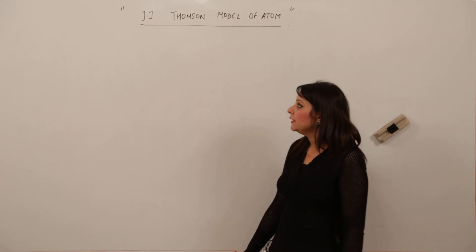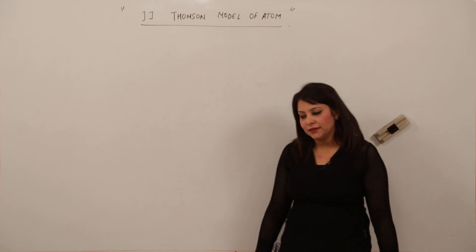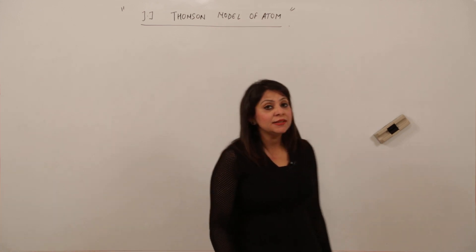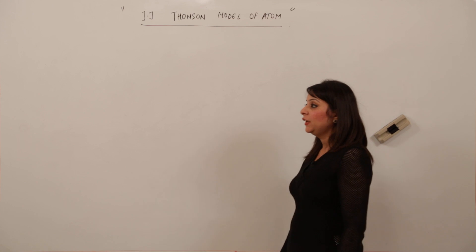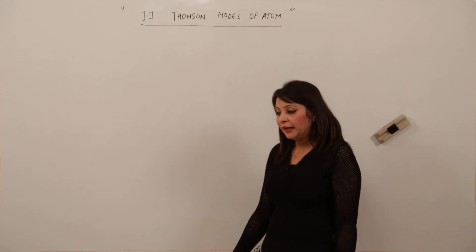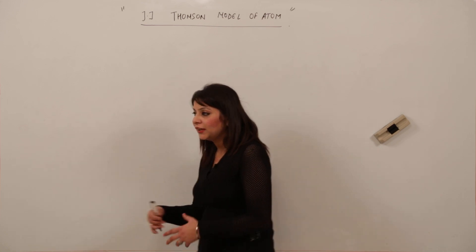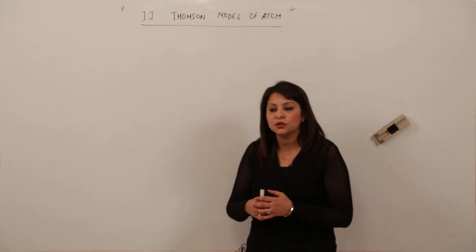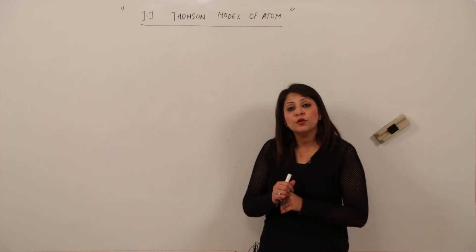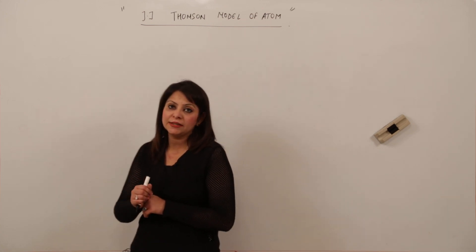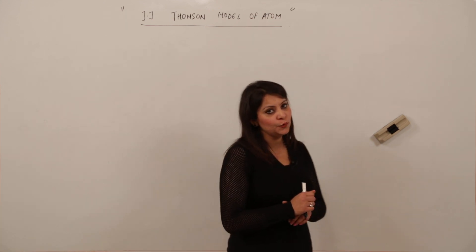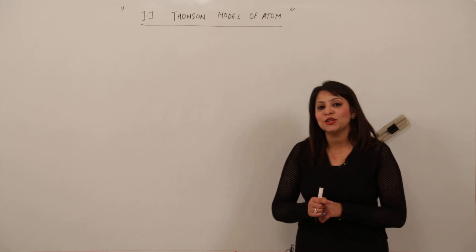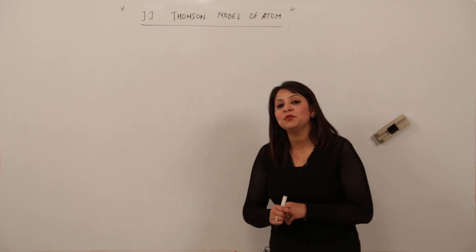As proved by Dalton, matter is made up of small particles called atoms. After learning about classification of matter, the second question that came to mind was: what is the actual structure of the atom? Many scientists were trying to find the structure, but the first volunteer was J.J. Thomson. He made the first attempt to discover the structure of the atom and also the first attempt to discover the subatomic particle — the electron.